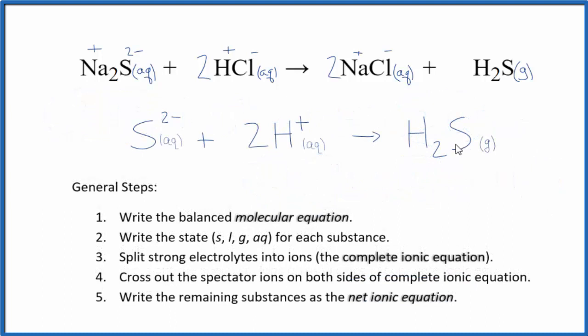So this is the balanced net ionic equation for sodium sulfide plus hydrochloric acid. You'll note that charge is conserved. We have two minus here. Two times one plus. That's two plus. They give us a net charge of zero. And over here we have a neutral compound net charge of zero. Atoms are also conserved. We have one sulfur, one sulfur. Two hydrogen atoms, two hydrogen atoms. So this is the balanced net ionic equation.